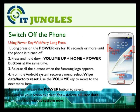To reset your device, first press and hold the power key for 10 seconds or more until the phone is turned off. Then, while it is off, press and hold the volume up, plus home, plus power buttons at the same time. Once you see the Samsung logo appear, release all the buttons.